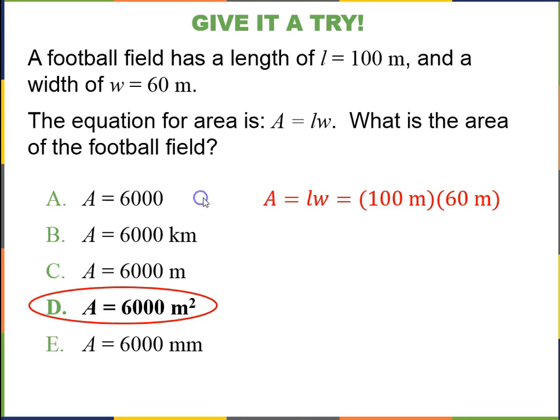Okay. So the answer is 6,000 meters squared. So clearly 100 times 60 is 6,000. That's what all the choices were. But you've got meters multiplied by meters. And so you would say 6,000 m times m, or meters squared. So a meter squared is a derived unit. It's a unit of area, as opposed to meter, which is a unit of length.